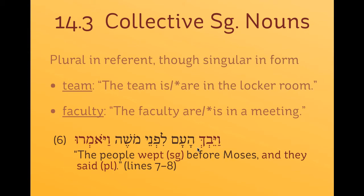I can't fully explain syntactically why this alternation happens — it's more a problem for syntax than for semantics. Semantically, these nouns are one entity, so singular verb agreement makes sense; but they're also an entity consisting of many individuals, so plural verb agreement also makes sense.